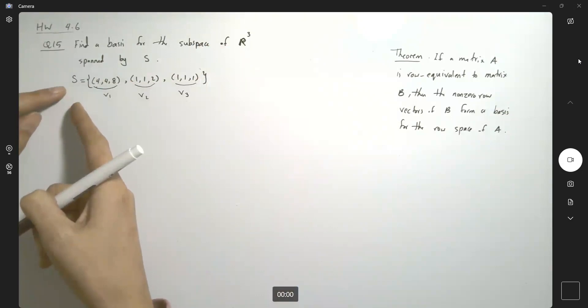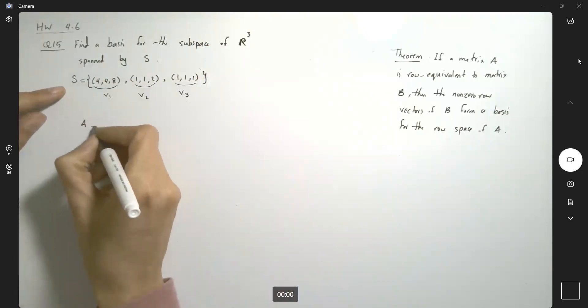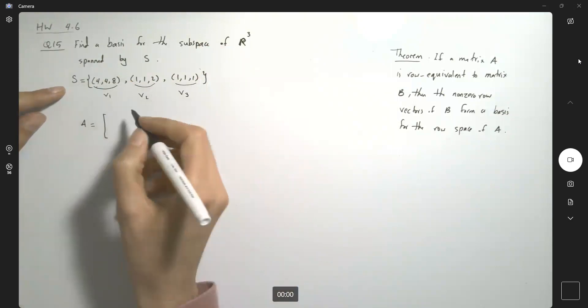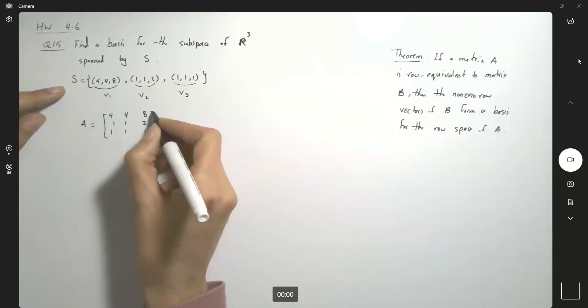It means that we can basically form a matrix A with these rows. So this is basically (4, 4, 8), (1, 1, 2), (1, 1, 1).